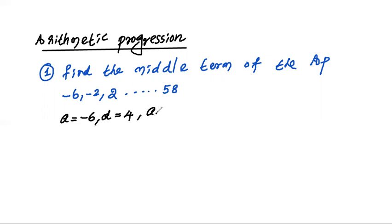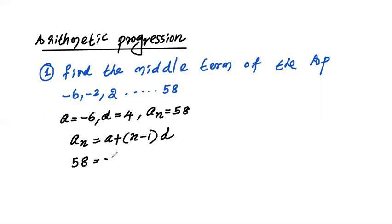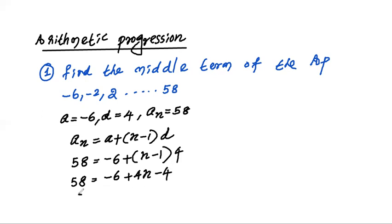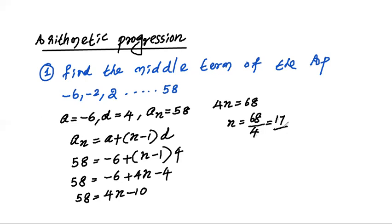The last term, which is the nth term, is given as 58. The formula for nth term is: An equals A plus n minus 1 times D. So 58 equals minus 6 plus n minus 1 into 4. That gives 58 equals 4n minus 10, so 4n equals 68, and n equals 68 over 4, which equals 17.